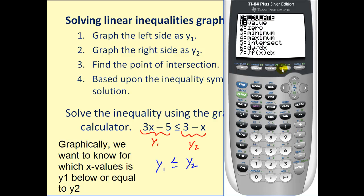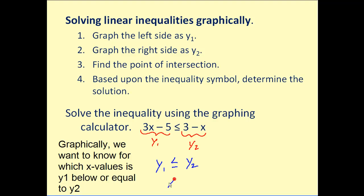Let's start by finding that point of intersection. Hit second, calc. Select option five, and then enter three times. So we can see they're equal when x equals two, and then to the left is when y₁ is below y₂. So our solution will be when x is less than or equal to two. So you may want to check your solutions graphically because as you can see, we can check our solution without doing any algebraic manipulation.